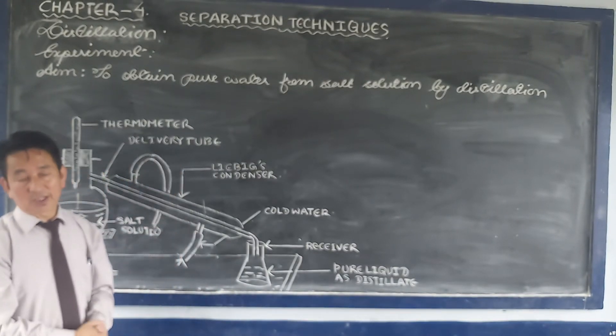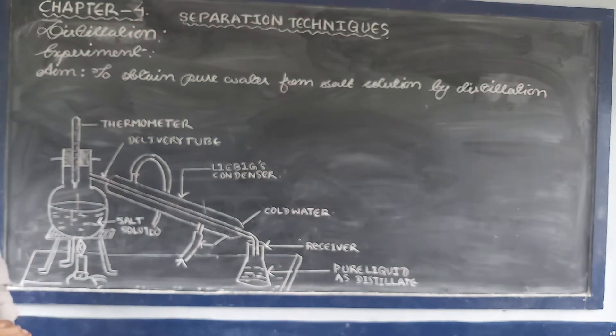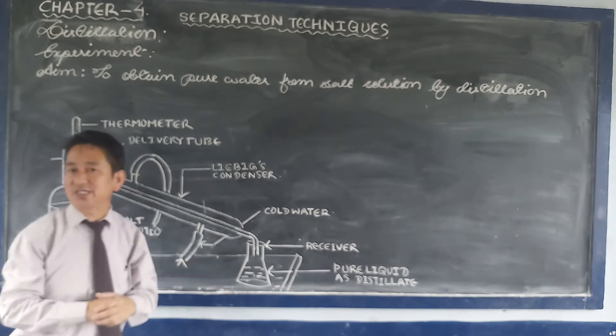The apparatus for distillation consists of a distillation flask, condenser, and receiver.